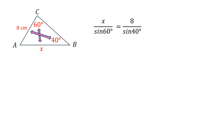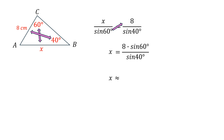If there are two or more missing variables in one equation, it is not possible to solve. The next step is to isolate x: sine 60 is cross-multiplied to the right side, so it becomes x equals 8 times sine 60 degrees over sine 40. We use the approximation symbol because we'll be rounding off — 8 times sine 60 degrees is approximately 6.93.